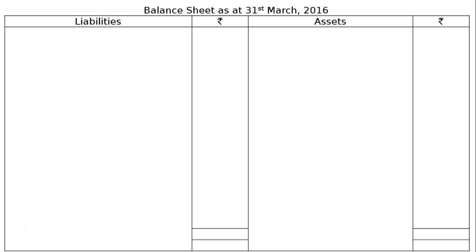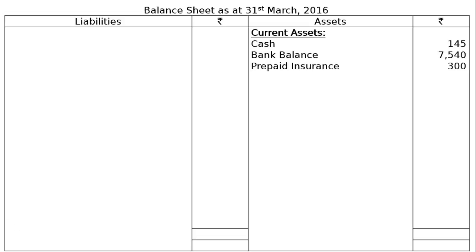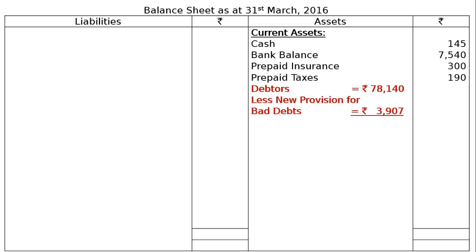Then move to the balance sheet as at 31st March 2016. On the asset side, current assets: cash Rs. 145, bank balance Rs. 7,540, prepaid insurance Rs. 300, prepaid taxes Rs. 190. Debtors Rs. 78,140, less new provision for bad debts Rs. 3,907, giving Rs. 74,233 in the final column. Then closing stock Rs. 29,638.